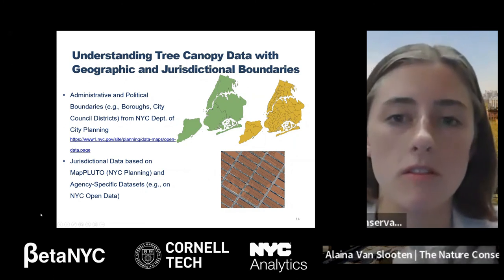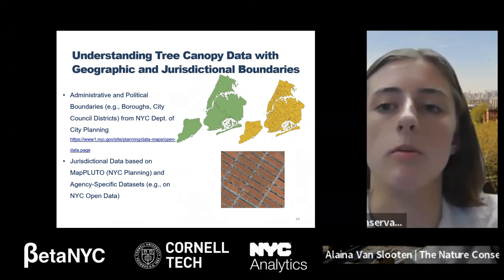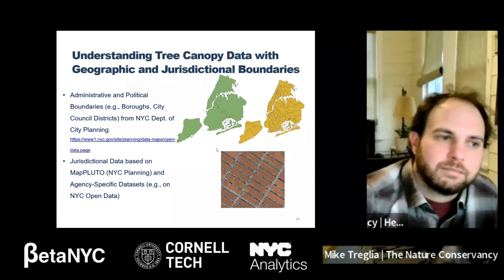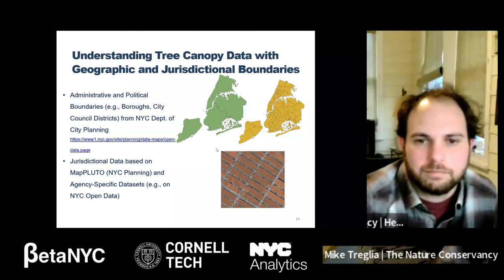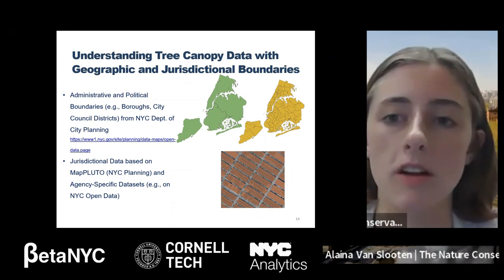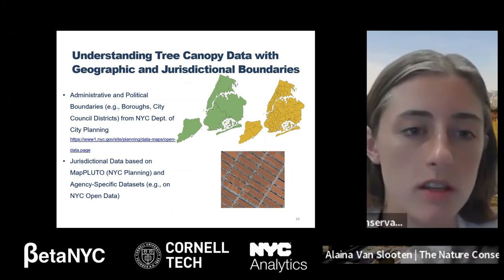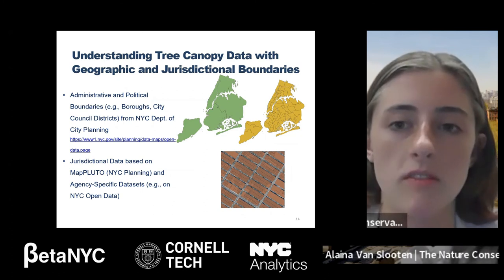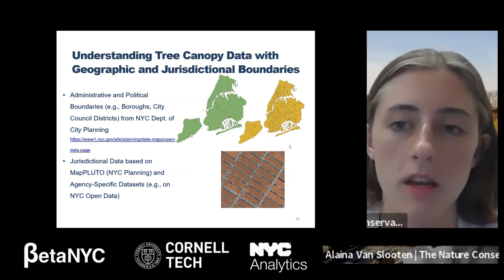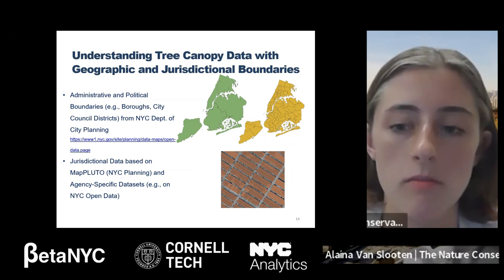We looked at the urban forest across different administrative and political boundaries. Many of these are unique to New York City, such as the five boroughs, as well as neighborhood tabulation areas, which are smaller areas created for planning purposes. We also folded in jurisdictional and agency-specific data to understand how canopy falls across public and private land and on certain agencies' areas.